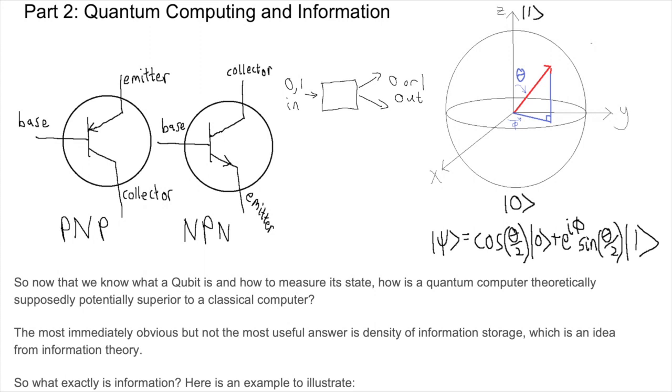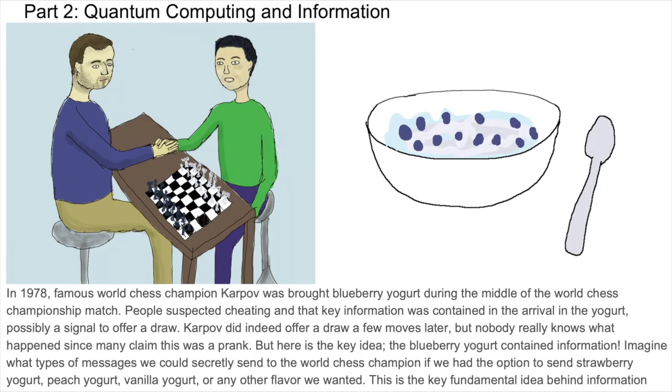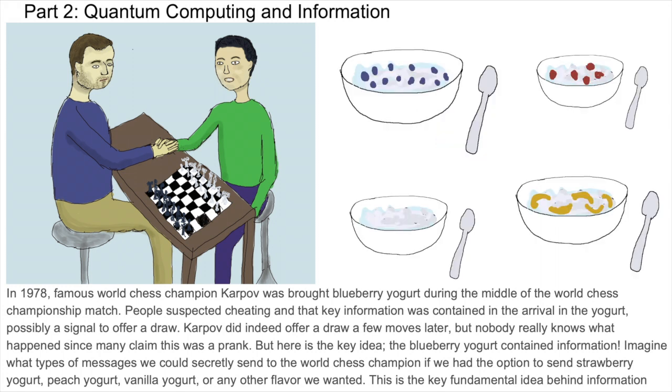The most immediately obvious but not the most useful answer is density of information storage, which is an idea from information theory. So what exactly is information? Here's an example to illustrate. In 1978, famous world chess champion Karpov was brought blueberry yogurt during the middle of the world chess championship match. People suspected cheating and that key information was contained in the arrival of the yogurt, possibly to signal to offer a draw. Karpov did indeed offer a draw a few moves later, but nobody really knows what happened since many claimed this was a prank. But here's the key idea: the blueberry yogurt contained information. Imagine what types of messages we could secretly send to the world chess champion if we had the option to send strawberry yogurt, peach yogurt, vanilla yogurt, or any other flavor we wanted. This is the key fundamental idea behind information theory.